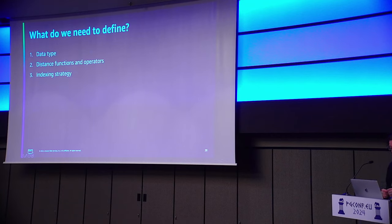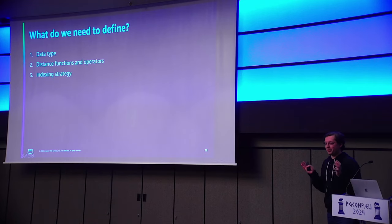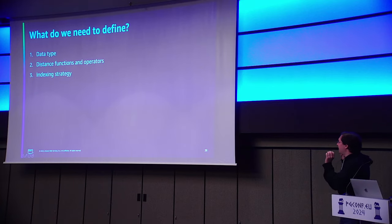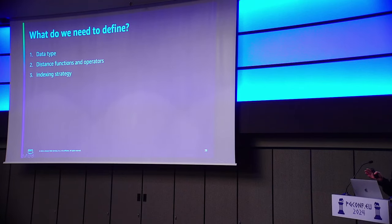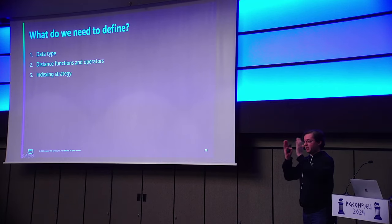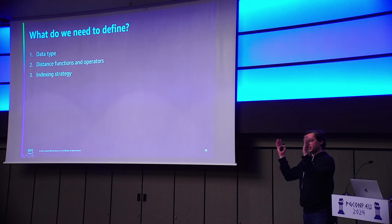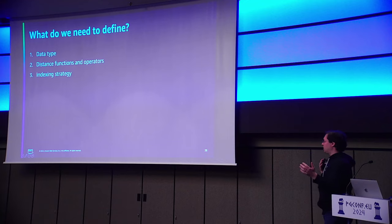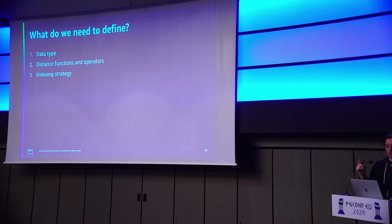As we implement things, we need to define three things. First, a data type — we need a vector. Then we need distance functions and operators, because distance tells us how similar we are to each other. Distance can be line of sight, which is known as Euclidean distance; it could be cosine distance, which is an angular distance; there's also dot product and some bitwise comparisons. Finally, we need our indexing strategies, which will be the bulk of the remainder of the talk.